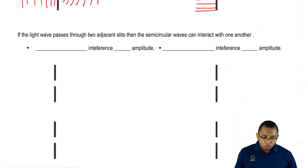Finally, we're going to say if two light waves pass through adjacent slits, then these semicircle waves can react with each other.